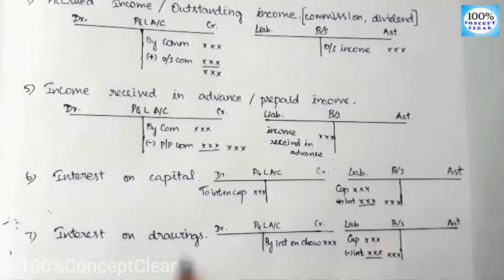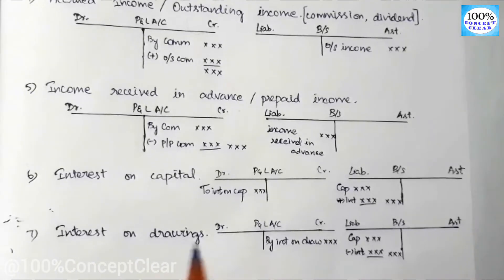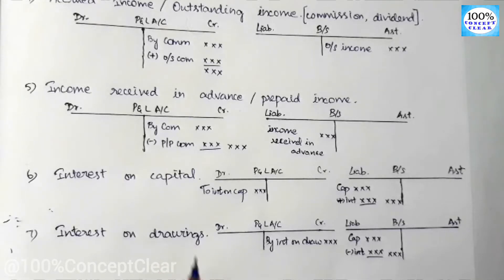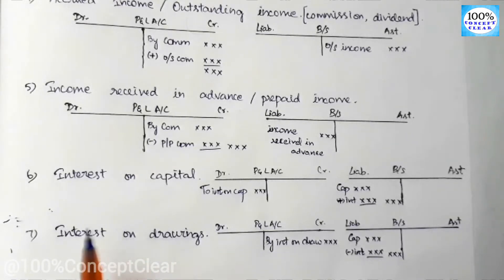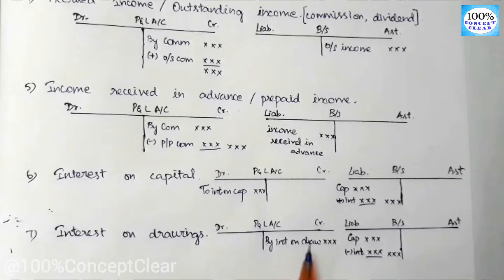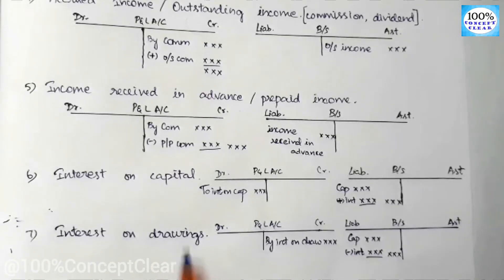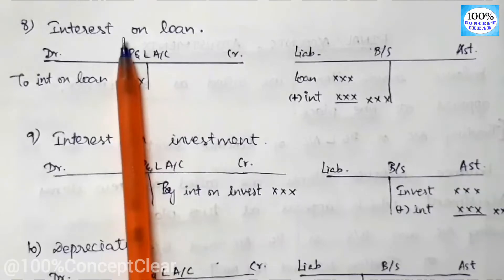The next adjustment is interest on drawings. Drawings are amounts taken for personal use. Because money is paid out of the business for personal use, that is drawings. Interest on drawings is income for the business — money paid back into the business — so it is a credit entry and appears in the P&L account on the credit side.